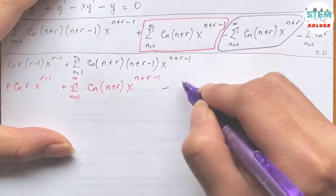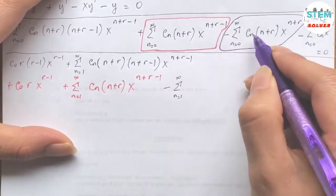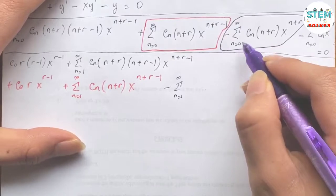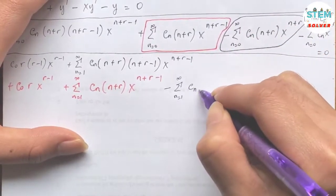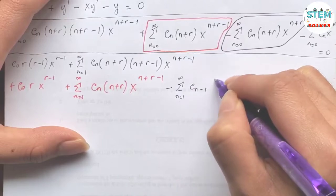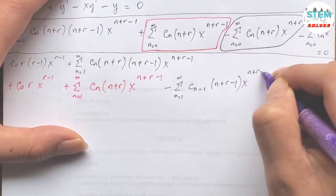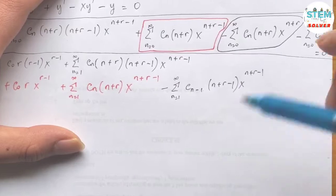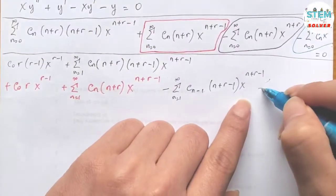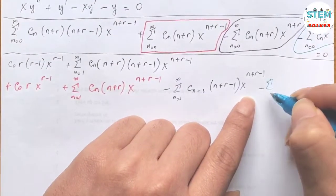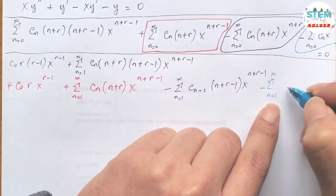We reindex the series starting from 1 to infinity. Adding 1 to the index means we subtract 1 for every n inside, giving c_{n−1} · (n+r−1) · x to the n+r−1. So we substitute c_{n−1} and subtract 1 inside the corresponding factors.